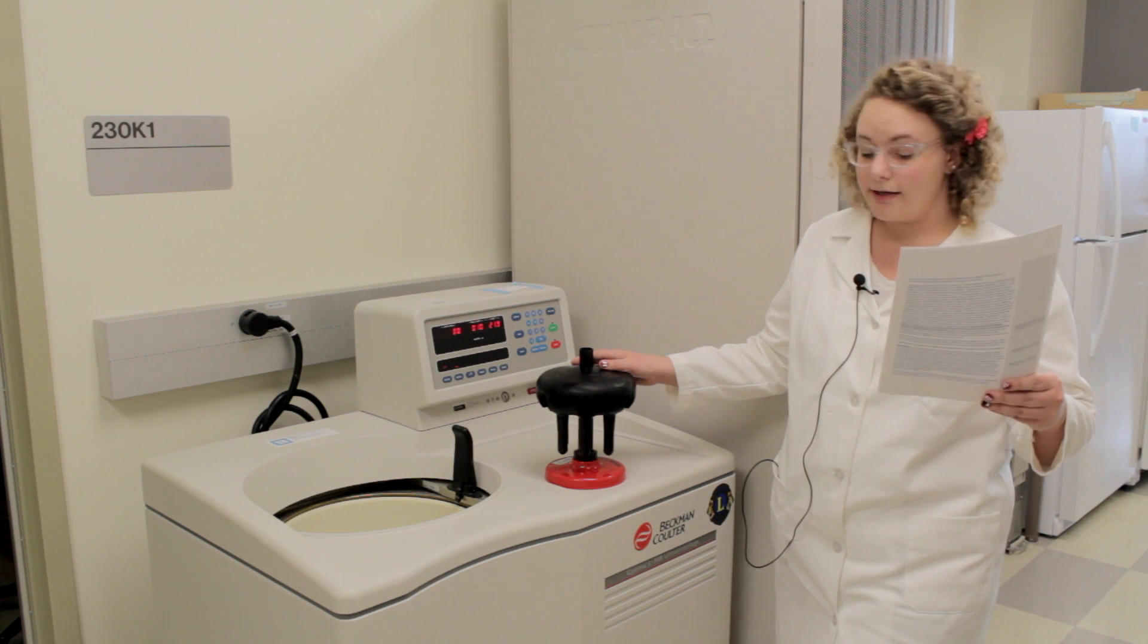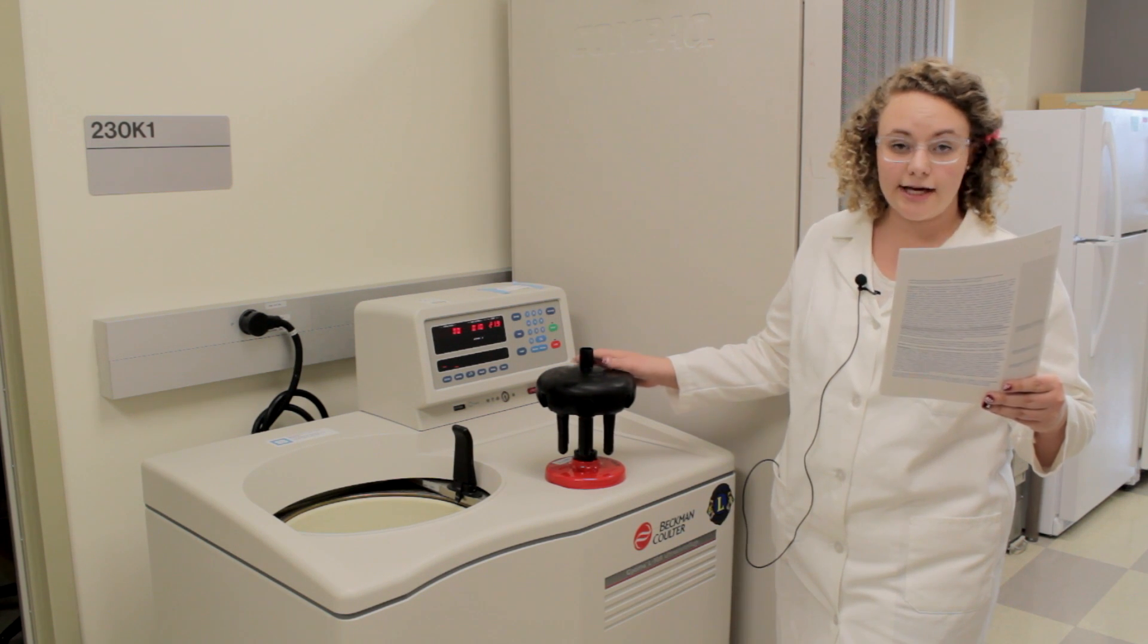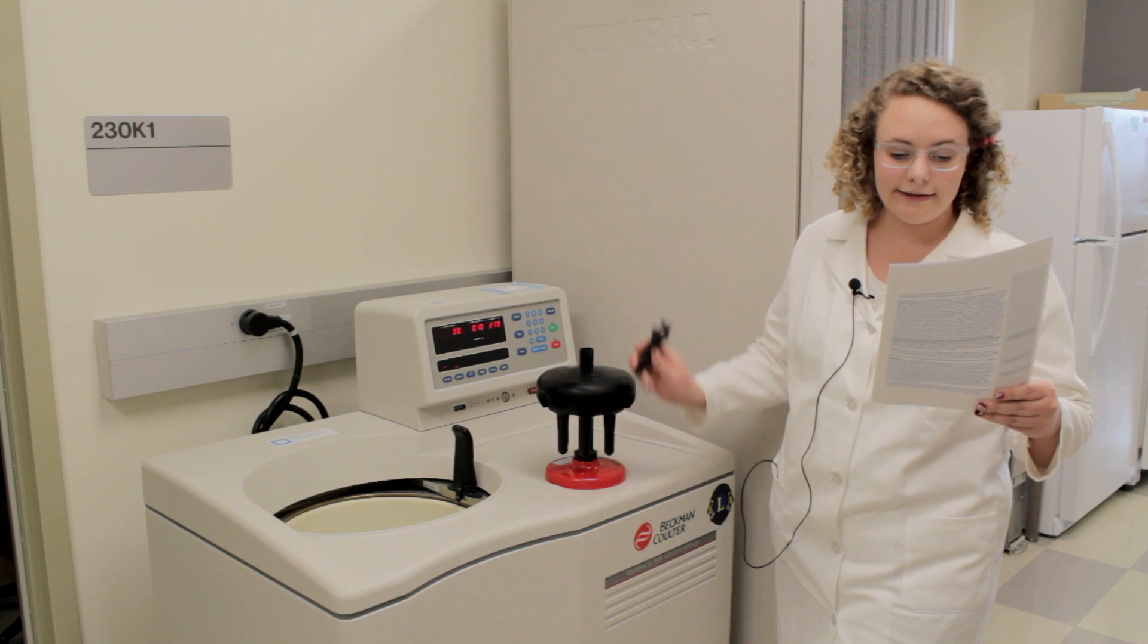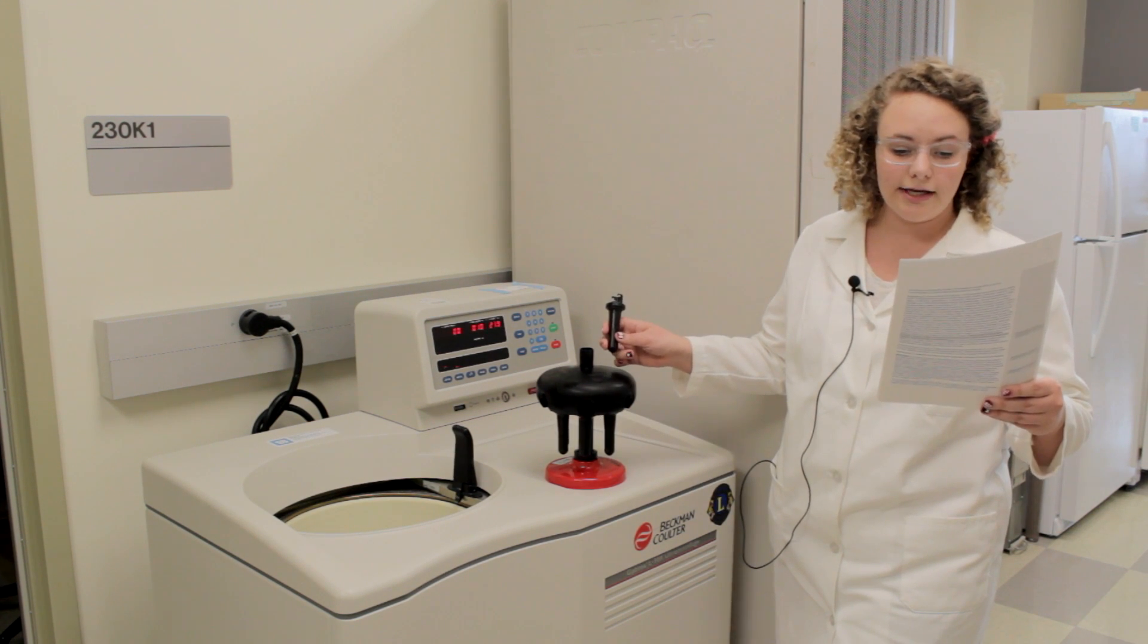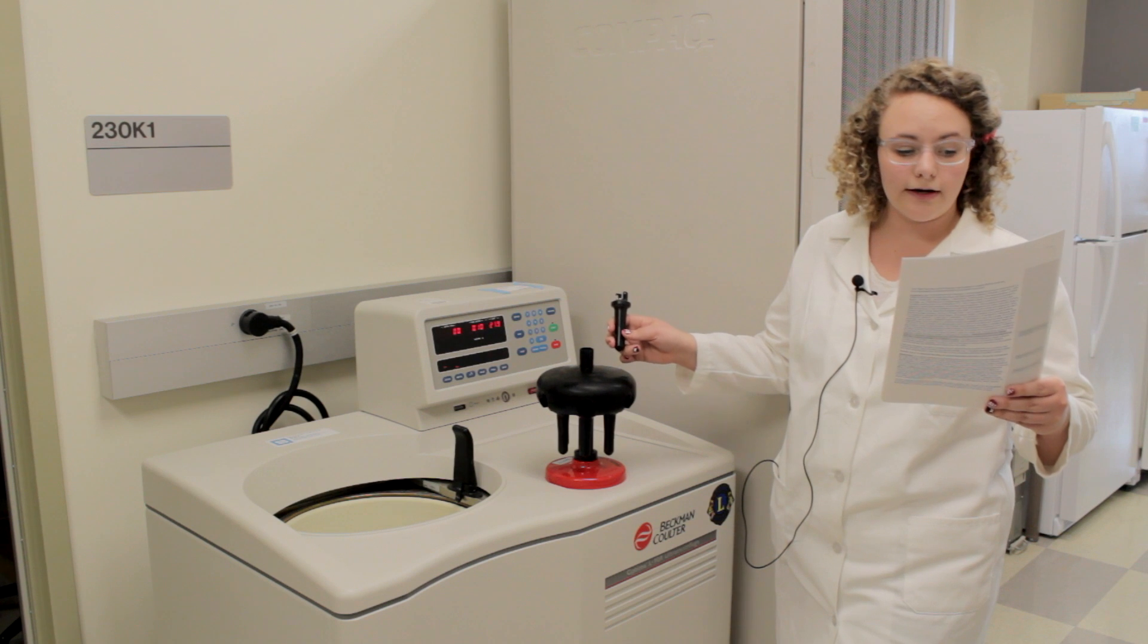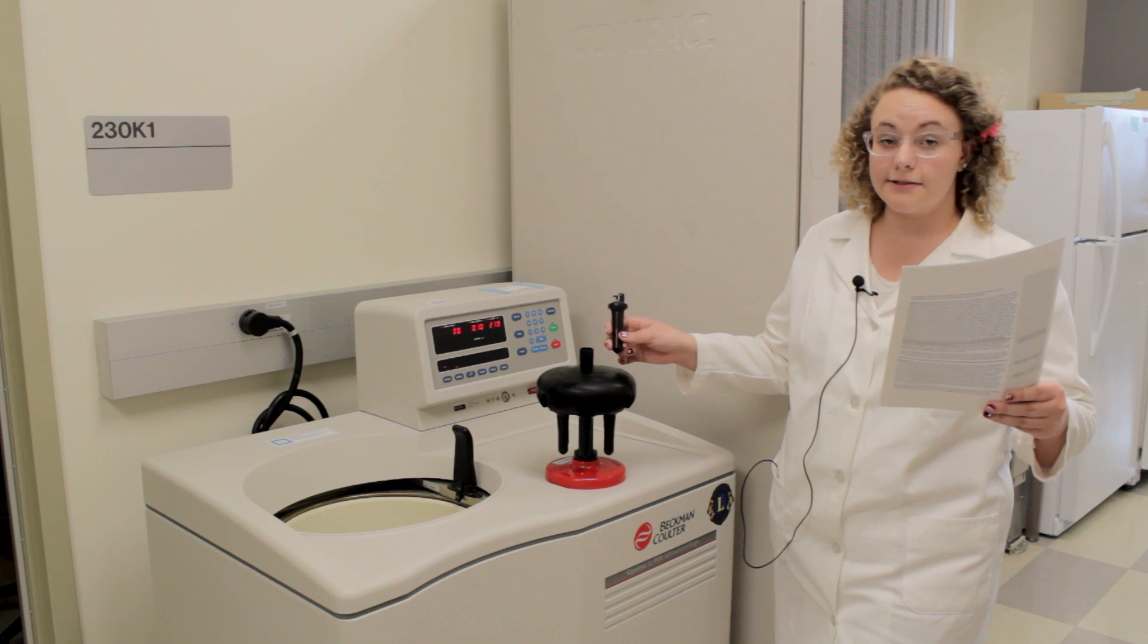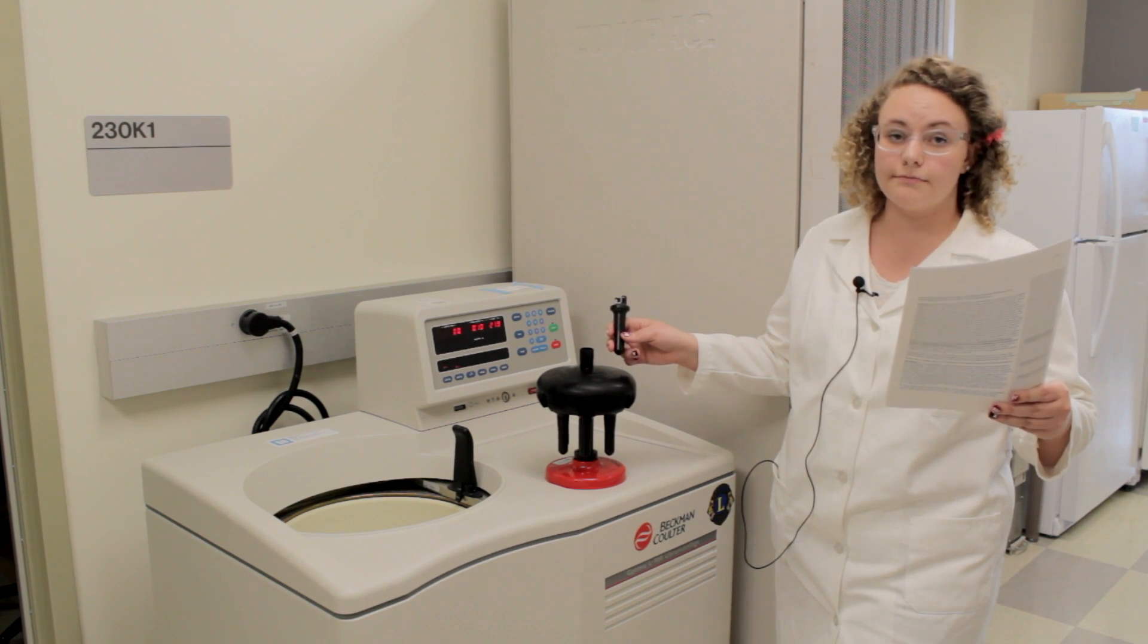Using the ultracentrifuge is extremely dangerous. Each test tube that you put in the centrifuge has to be measured exactly the same. If not, and the centrifuge is unbalanced, it has the power to take out entire floors and buildings.